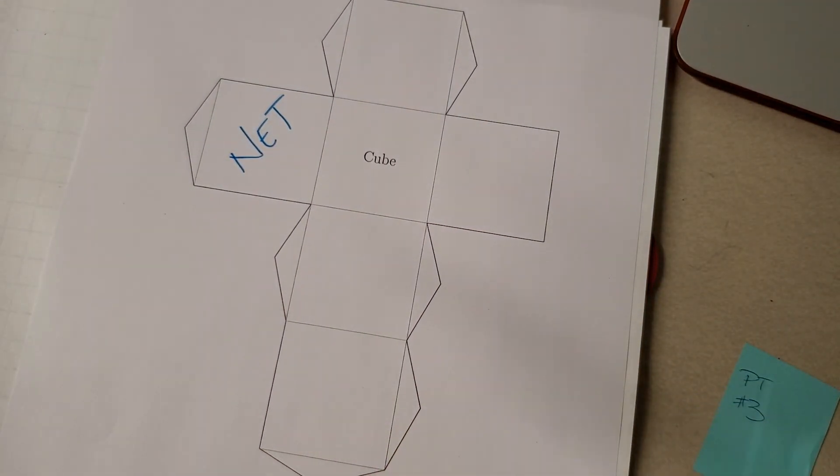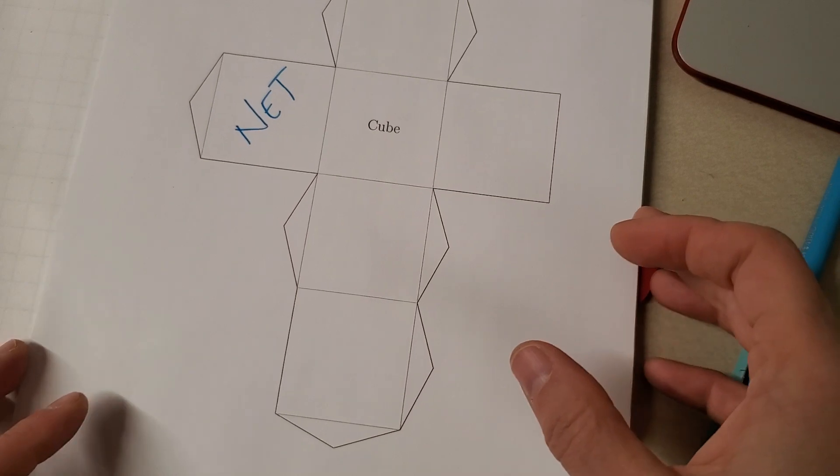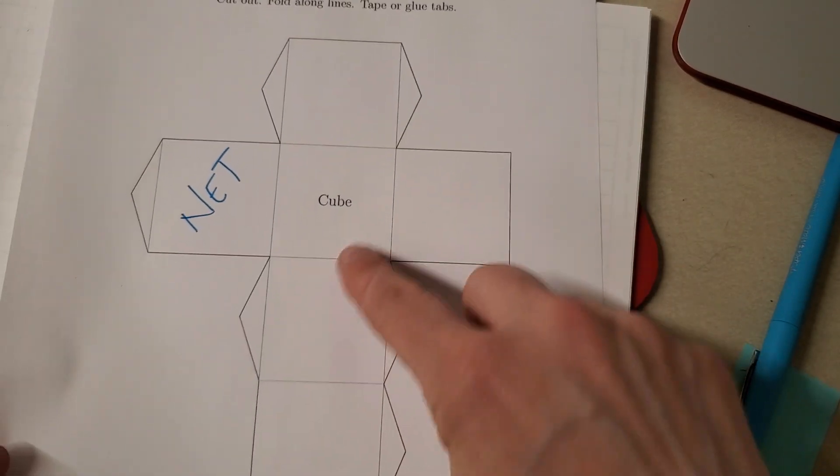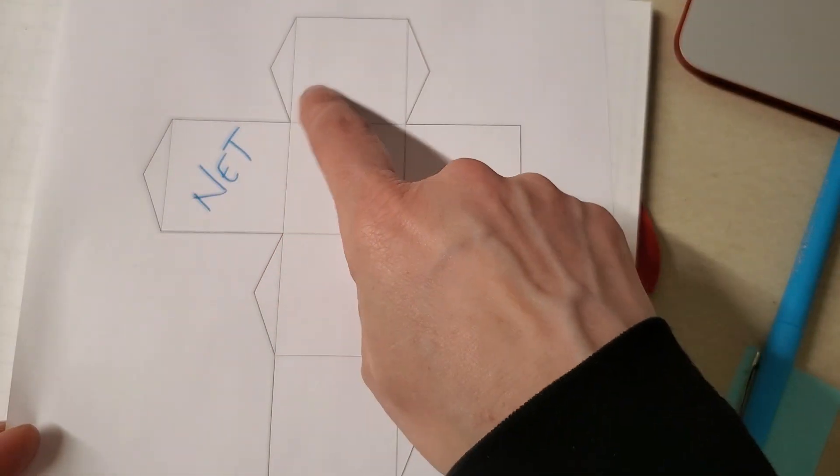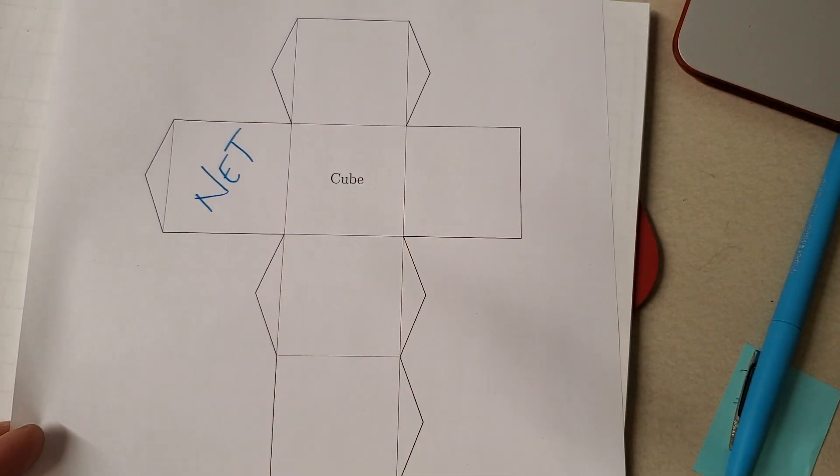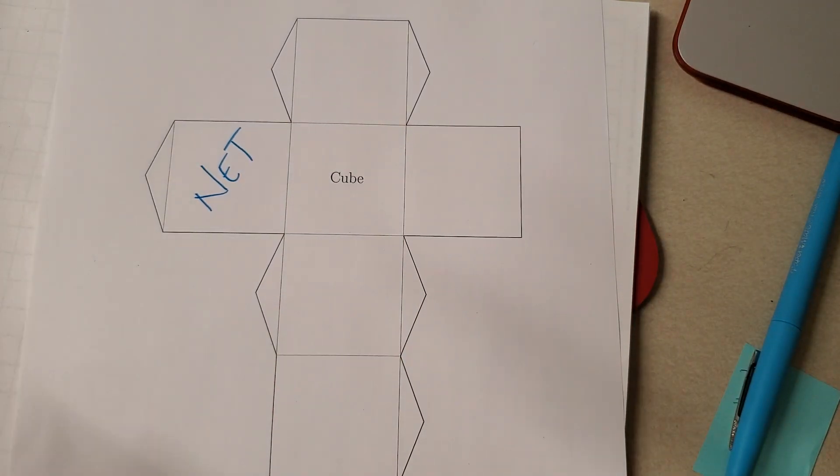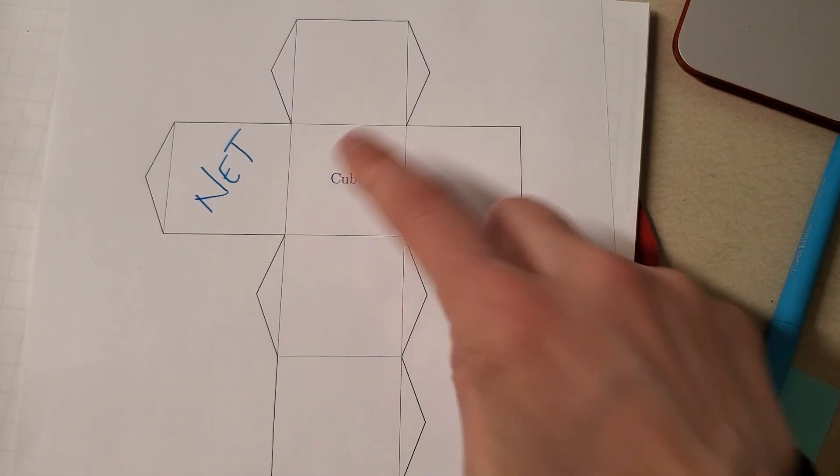Net, okay? And then this would be the net of a cube. So if we cut along all these outer edges and then fold it along the inside edges, we could fold it up and we would make a cube.